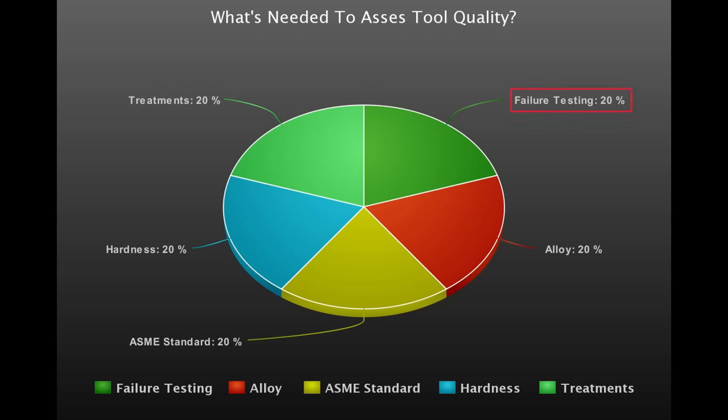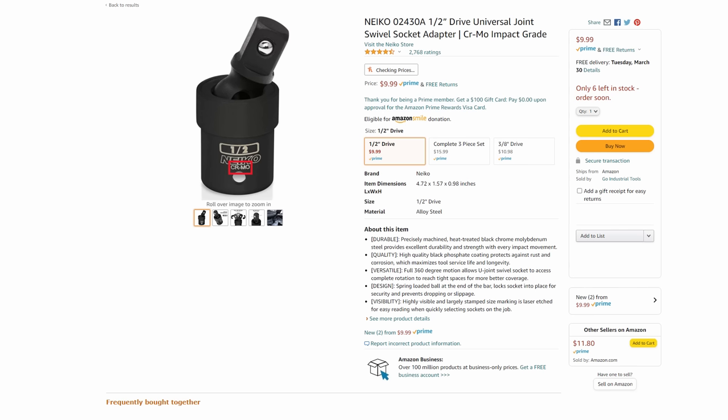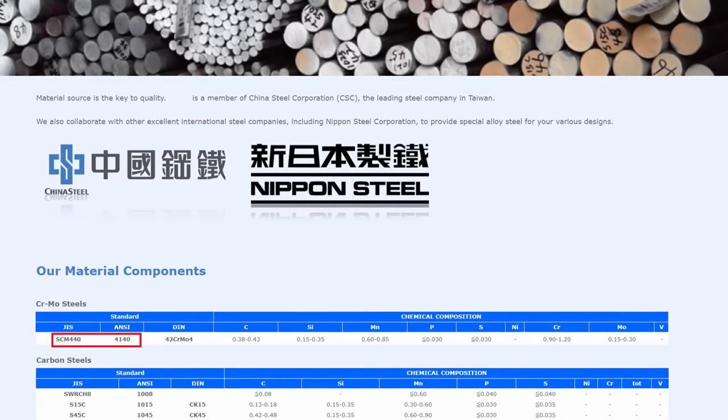Starting in the top right, failure testing. We got that covered. We definitely caused some of these to fail. Then alloy, or in our case, just knowing what that base alloy is. Luckily for us, we made sure to choose all chromoly impact adapters. Each adapter we bought is made from chromoly and the specific chromo alloy available and used for sockets in Asia, and specifically in Taiwan especially, is SCM four forty.